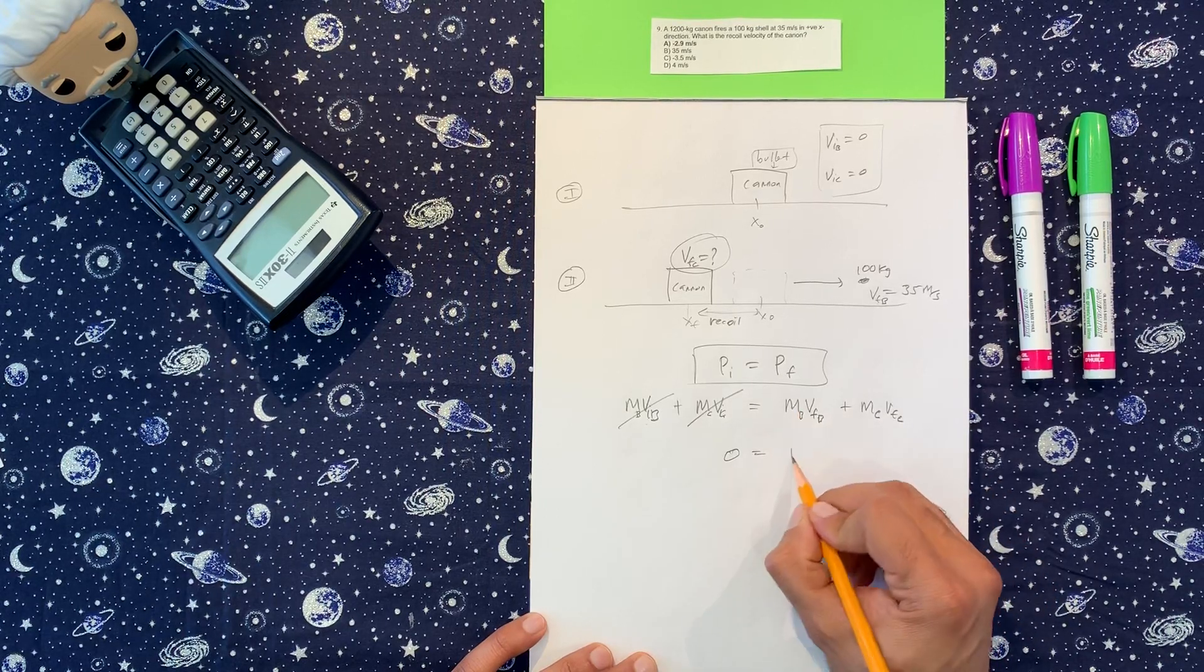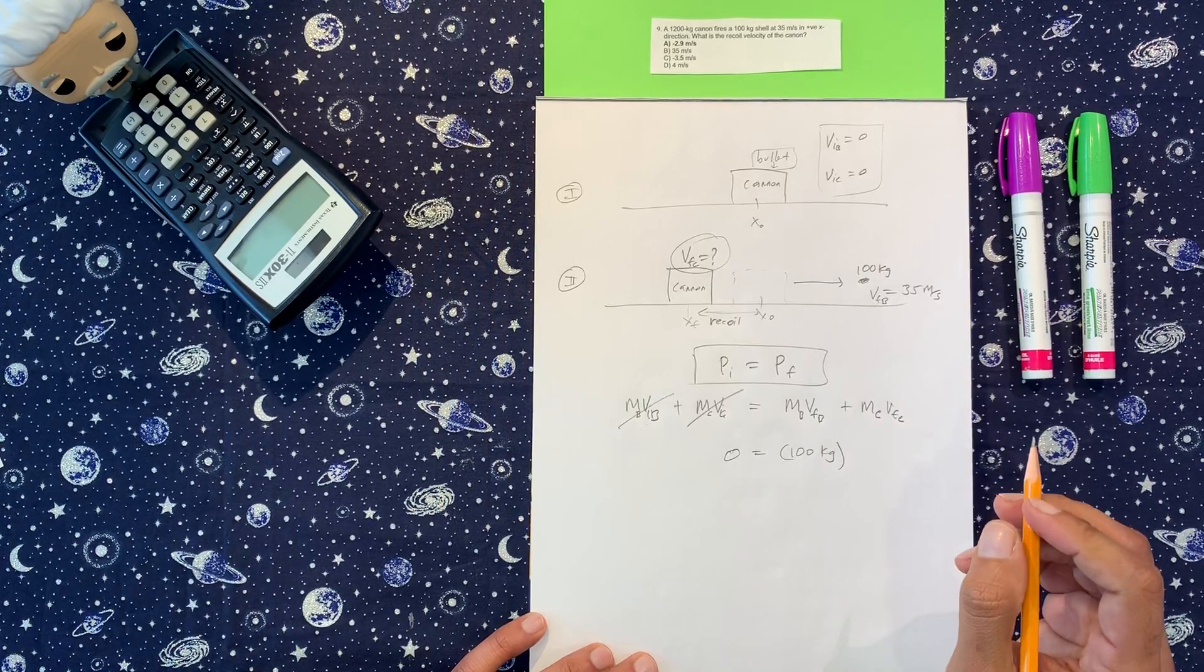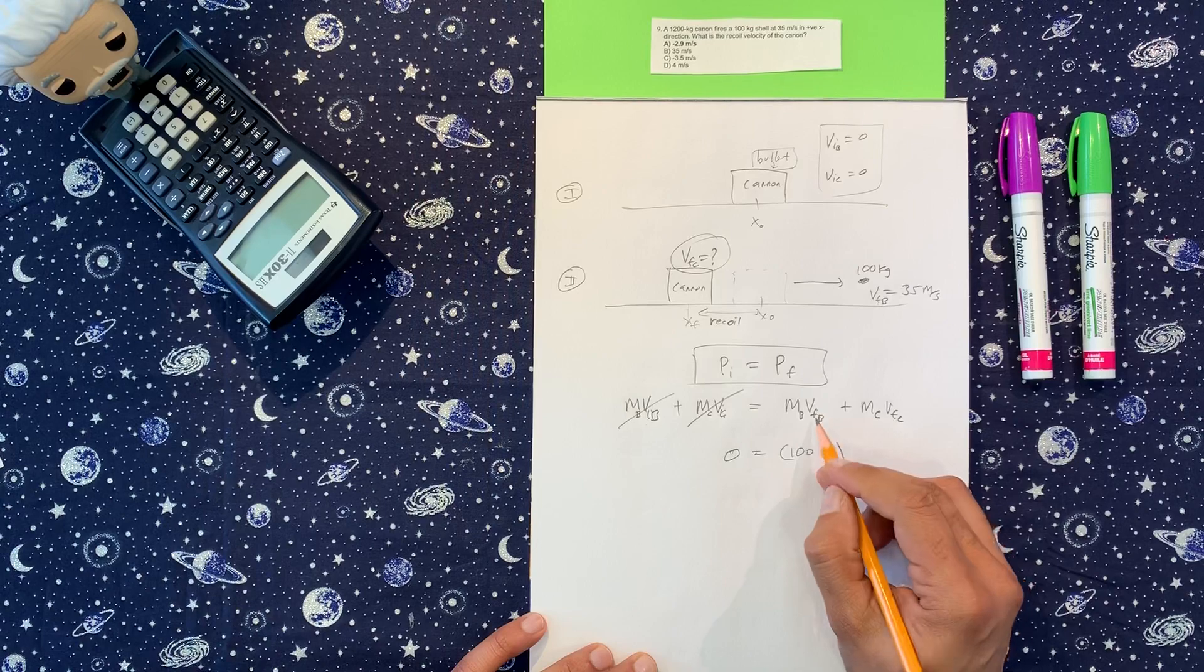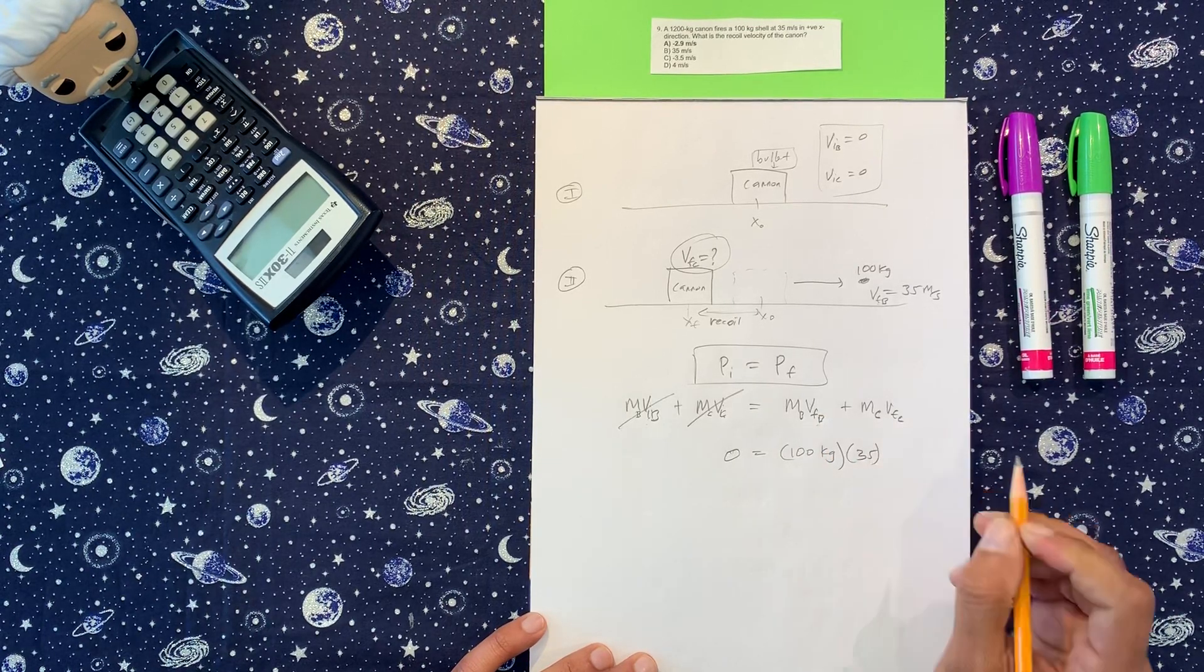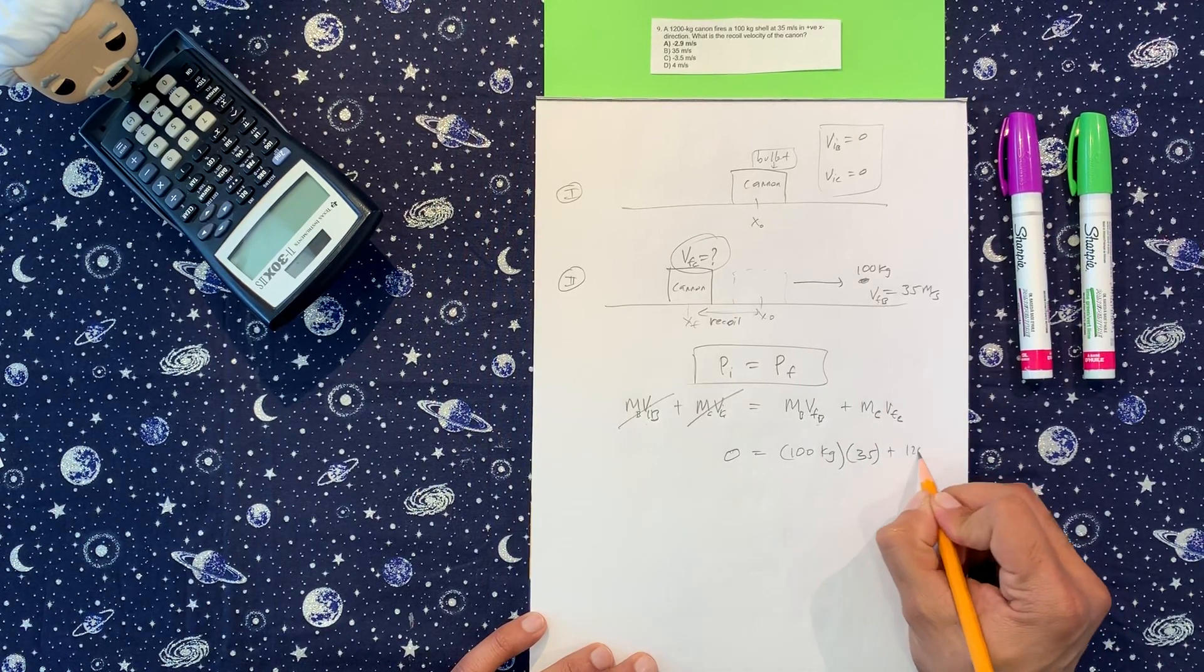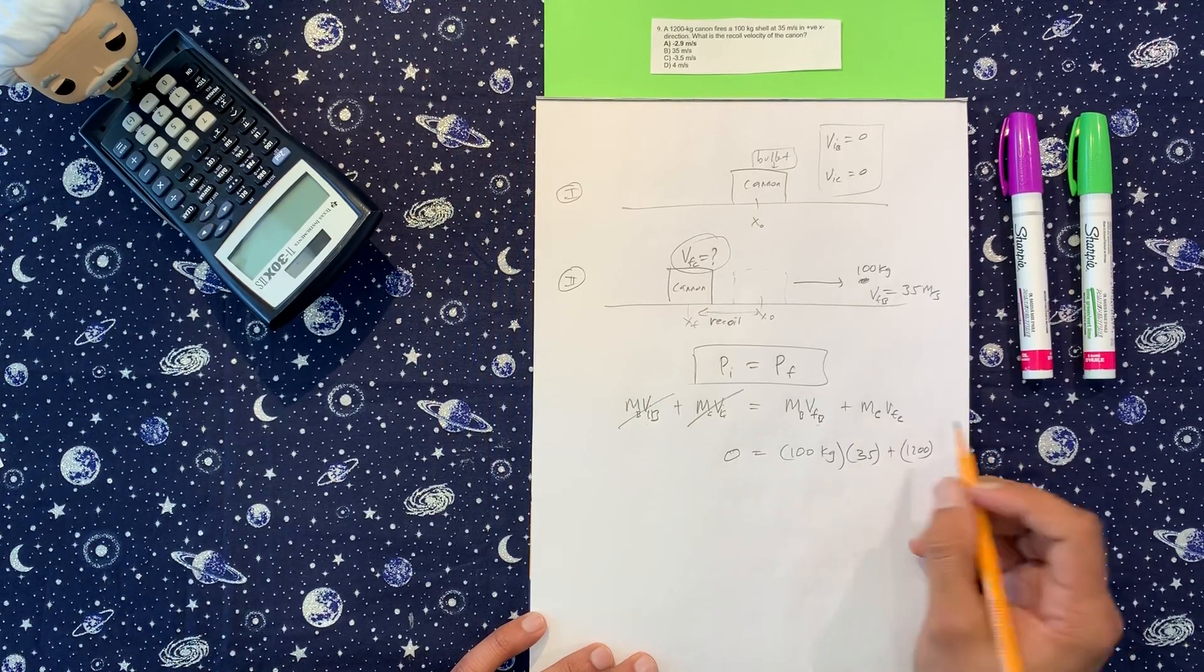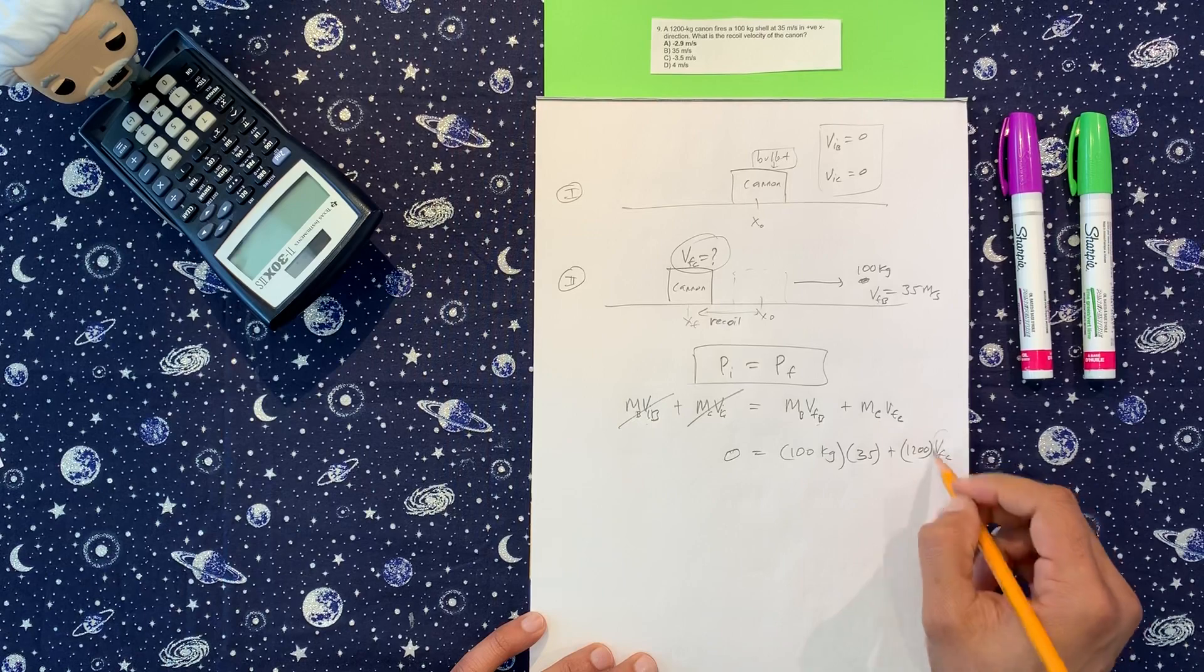This is the mass of the bullet is 100 kilograms. Velocity final of the bullet is 35. And then plus the mass of the cannon is 1200 kilograms, which is good. And velocity final of the cannon, which is the recoil velocity is what we're looking for.